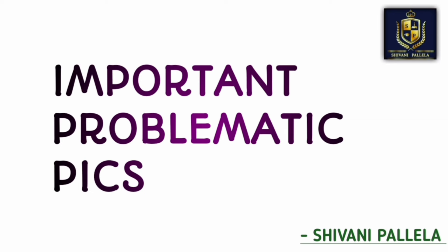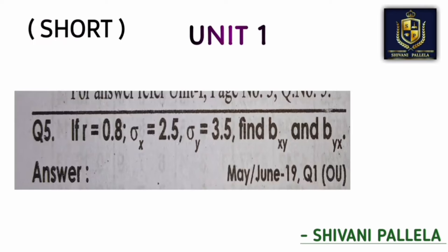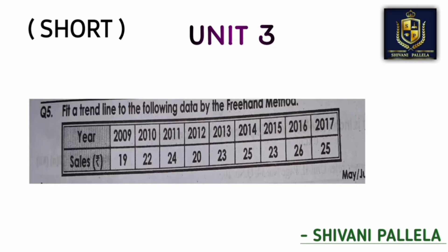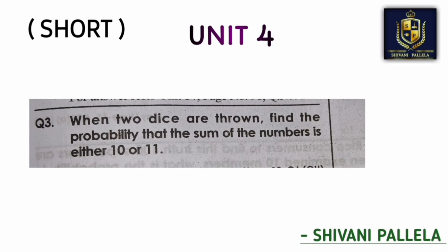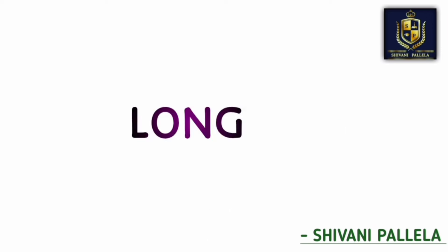For important problematic methods, as I have already shown, for four marks compulsory they will ask you to find out bxy and byx. The formula r equals standard deviation of x divided by standard deviation of y — you need to do that. The freehand method means you need to plot this in the graph. When two curves are drawn, this is the probability question, and binomial distribution is also an important question.